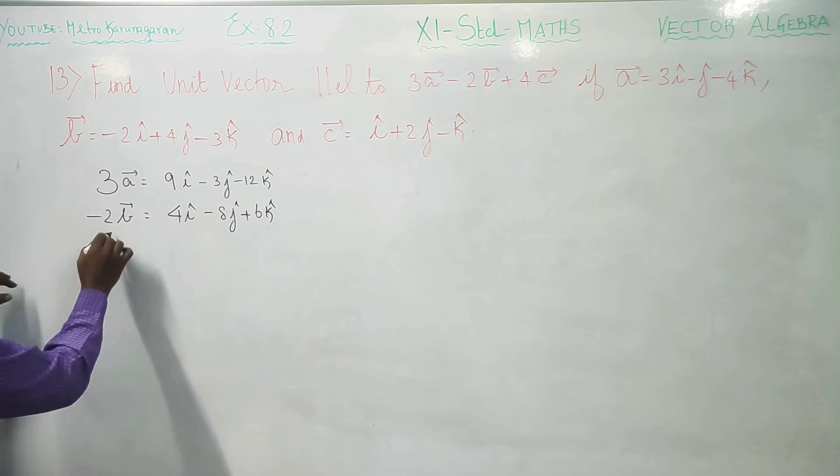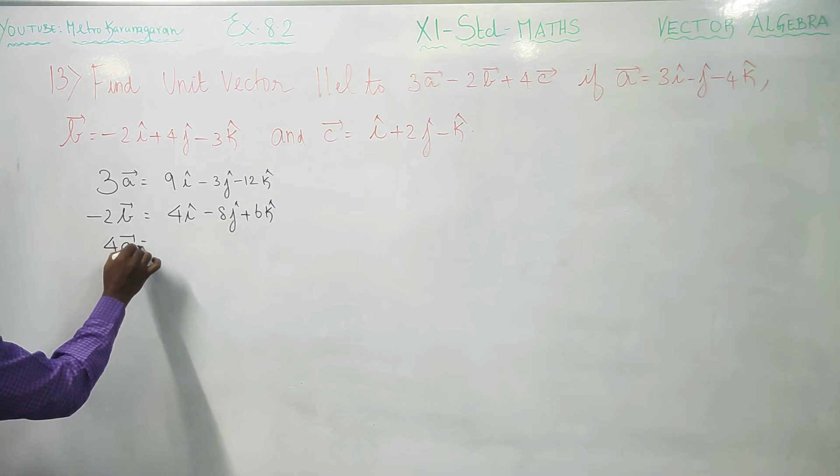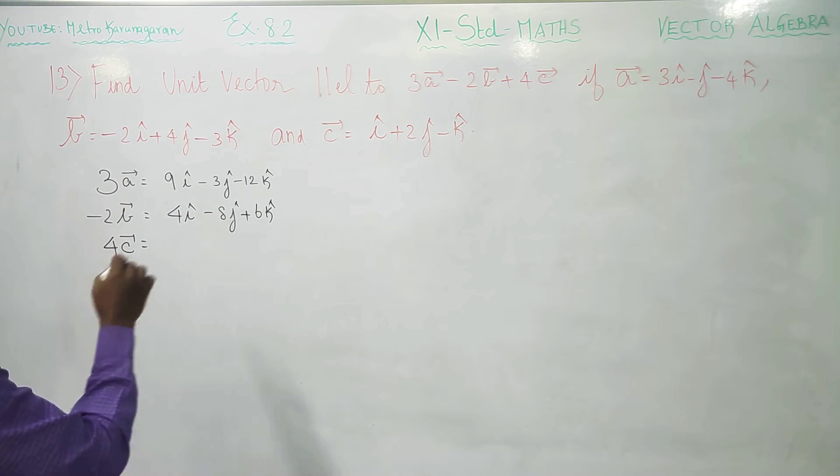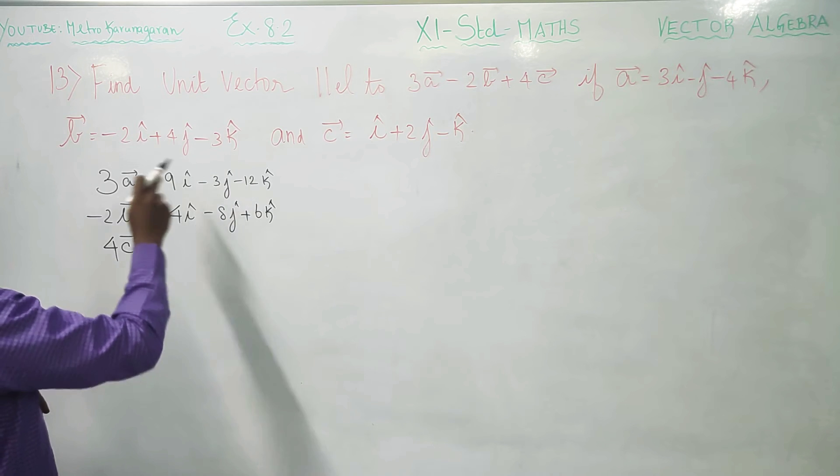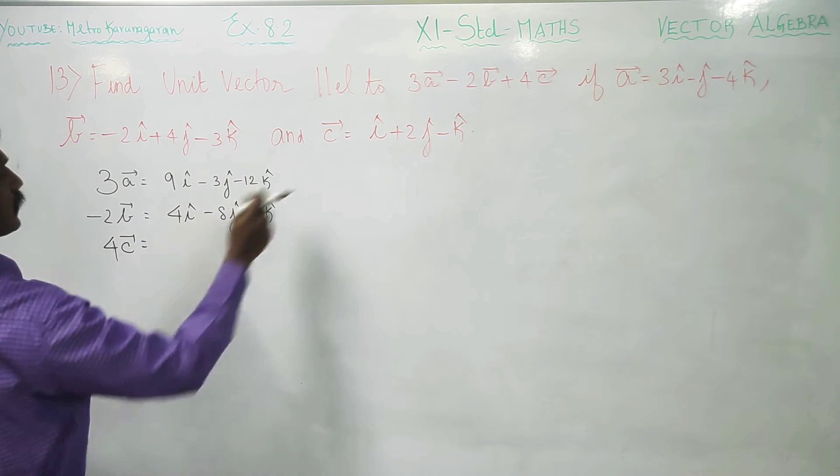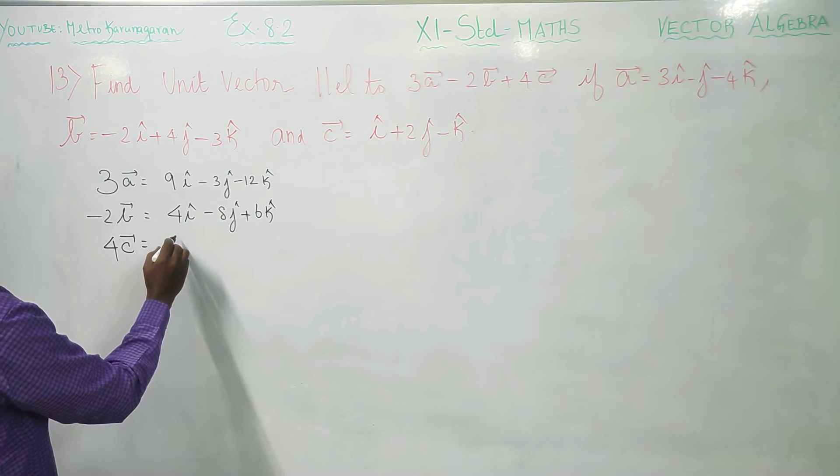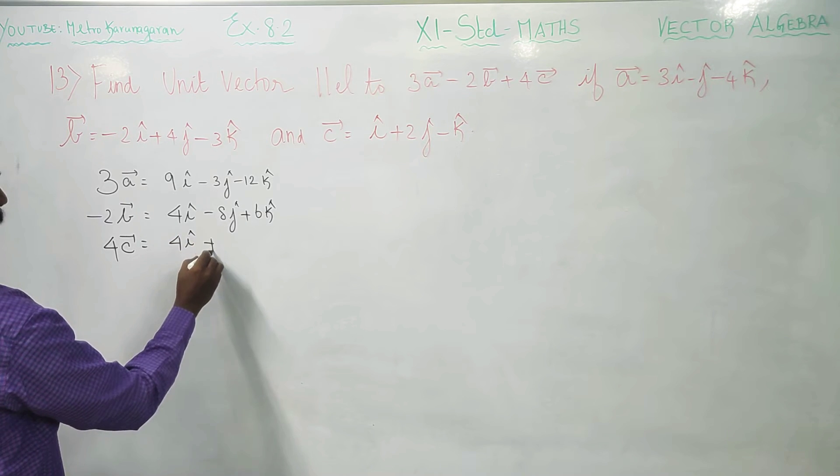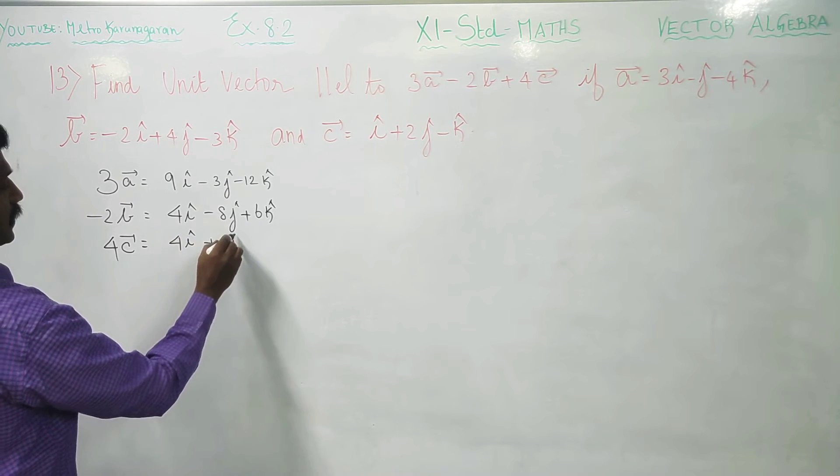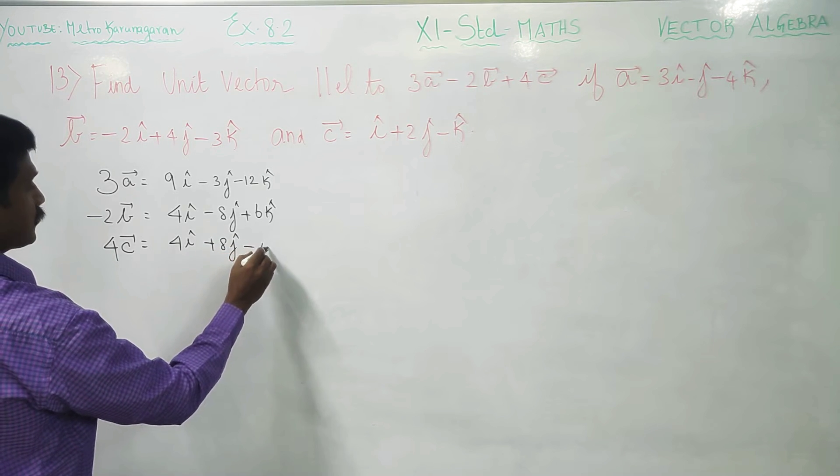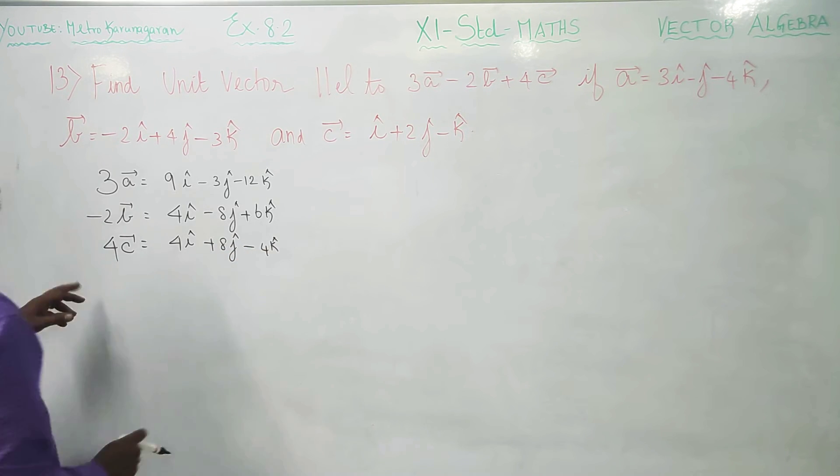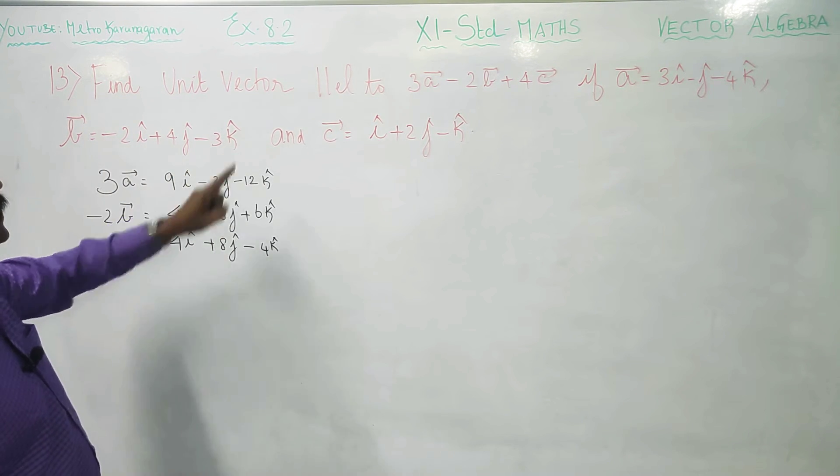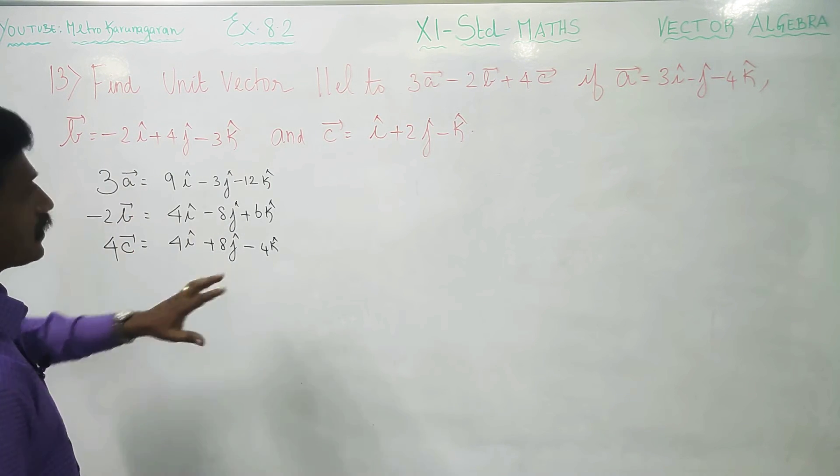After this, 4c vector. You have to multiply by 4 fully the c vector. You will be getting 4i vector plus 8j vector minus 4k vector. If you have full 4, then you will get 4, minus 2, this is 3.